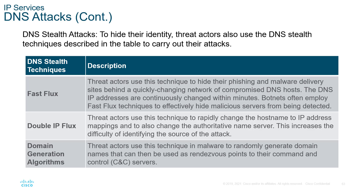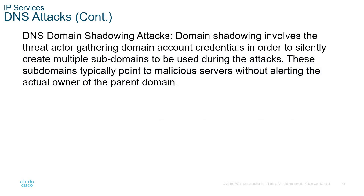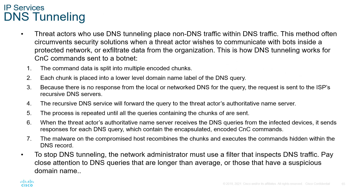Double IP flux rapidly changes hostnames to IP addresses, making security mechanisms more difficult to detect the attack. A domain generation algorithm has the threat actor use malware to randomly generate domain names as rendezvous points for their CNC servers. Shadowing attacks involve the threat actor gathering domain account credentials to silently create multiple subdomains used in the attack, sharing those subdomains with other DNS servers so security appliances don't see them as threats. Tunneling is where the threat actor places non-DNS traffic within DNS traffic on port 53 to obfuscate the data flow.